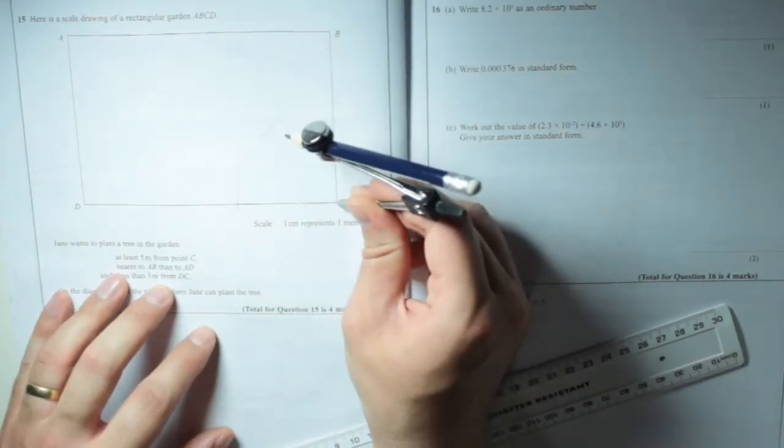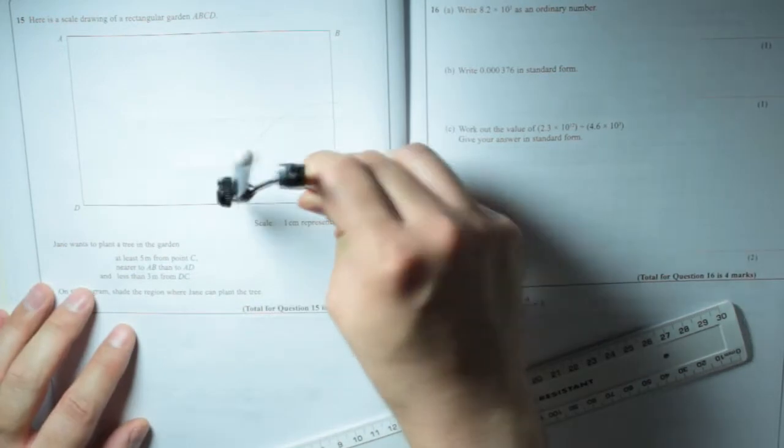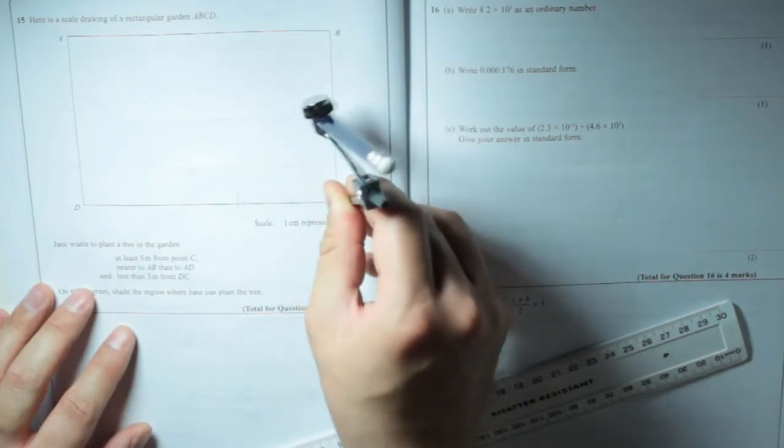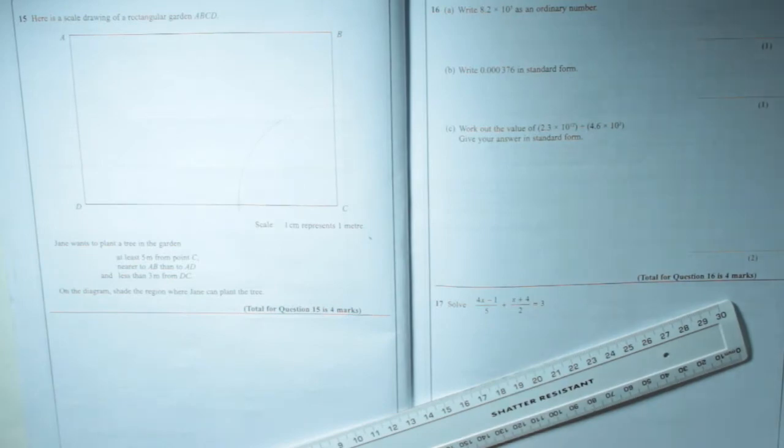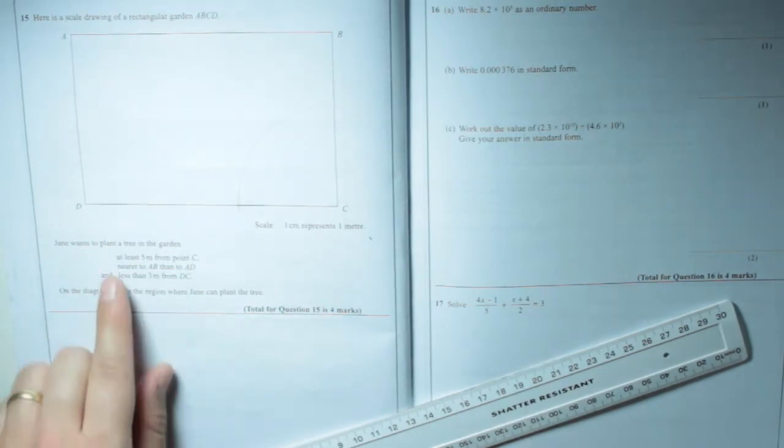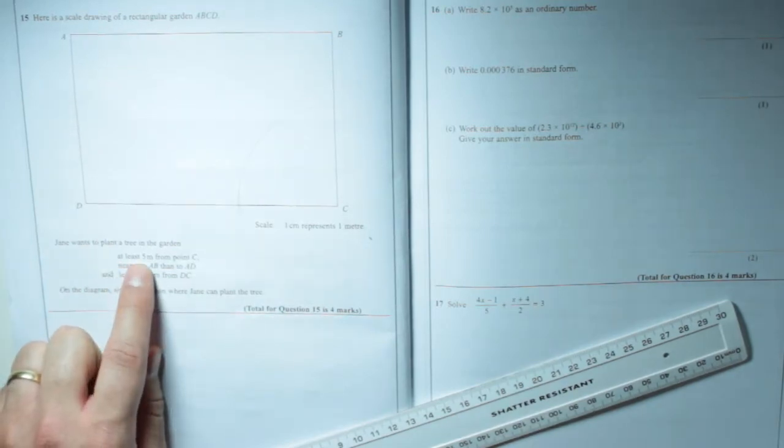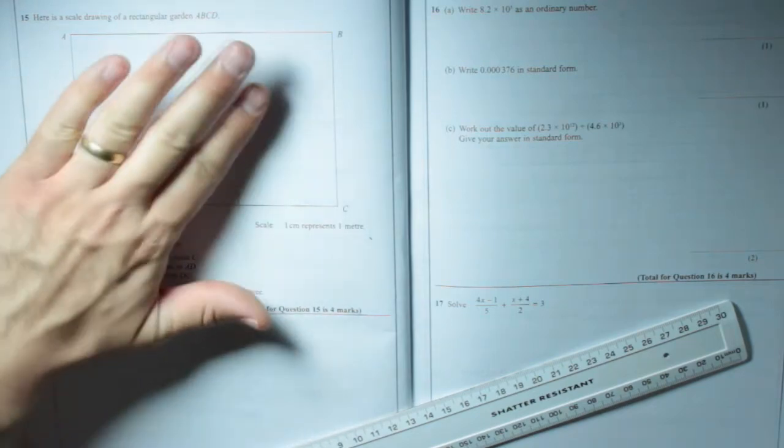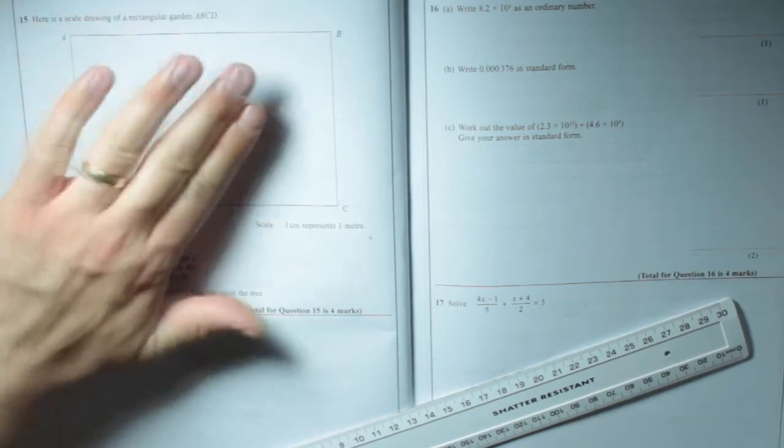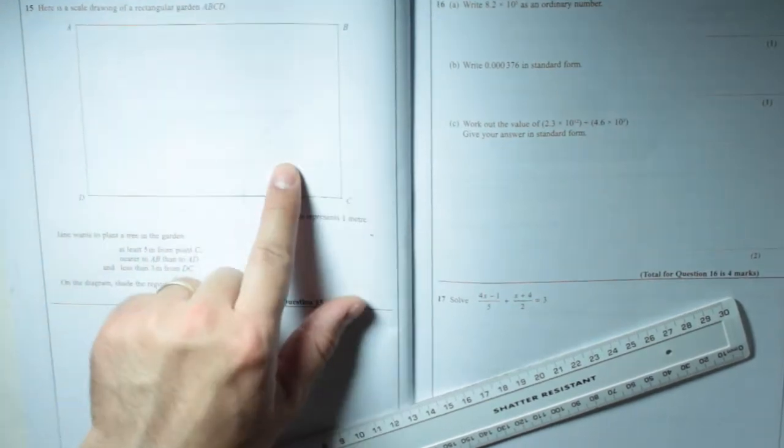Now the distance between this corner, point C, and anywhere along that line is five metres. And remember it says at least five metres from point C, which means it wants it to be further away than five, or five. Not in there, out there.